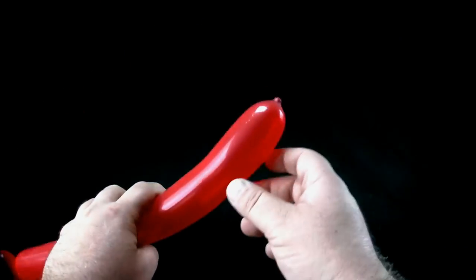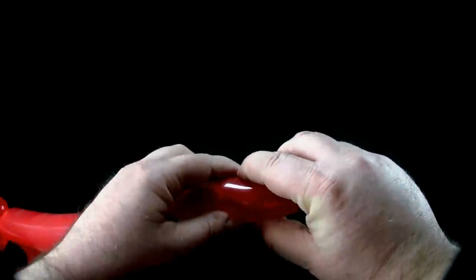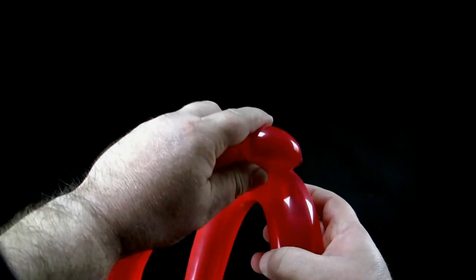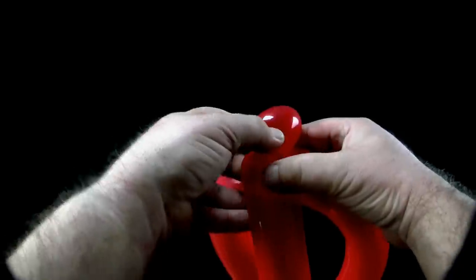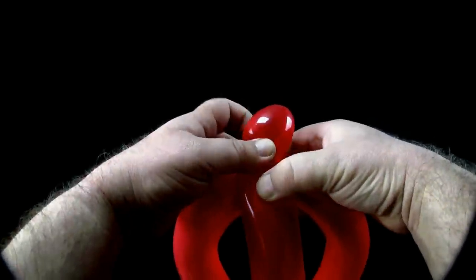At the end of the balloon, twist another one-finger bubble. Twist the bubble around the balloon at the midway point of the loop.